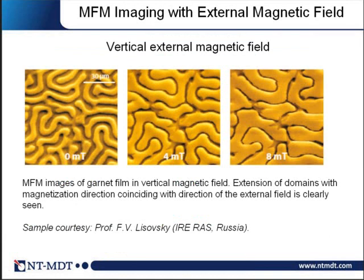A horizontal magnetic field breaks the in-plane symmetry of your sample if such symmetry exists. If you apply a vertical, out-of-plane magnetic field, you can change the magnetic structure of your sample without breaking the in-plane symmetry. As shown in these images, domains in garnet film detected by MFM at different out-of-plane magnetic fields show that this field doesn't break the symmetry — you don't see a stripe structure as with an in-plane field, because the external magnetic field is vertical.